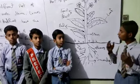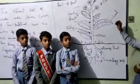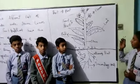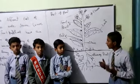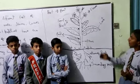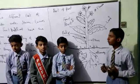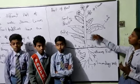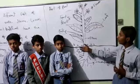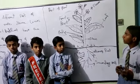The leaves produce glucose for the growth of the plant. The plant uses water to produce glucose, which supports plant growth.